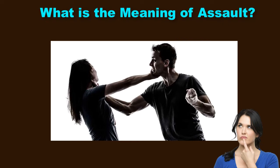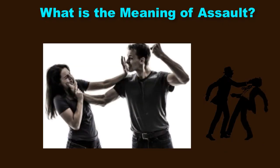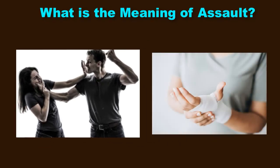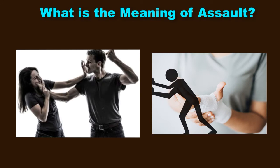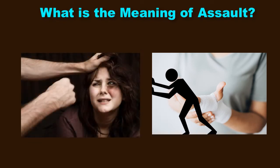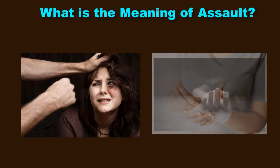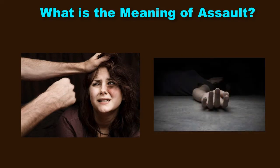Assault is something where you intentionally harm others. We have already seen this while defining battery — there too you intentionally cause injury to another. But the key difference is that here you did not actually apply force. Rather, you threatened someone. You just verbally abused someone, and you threatened at a level that caused harm to that person. That is assault.